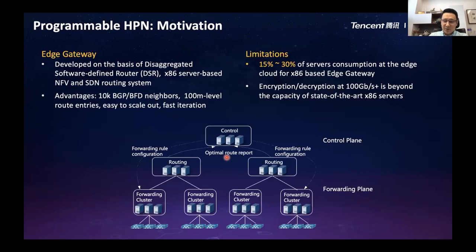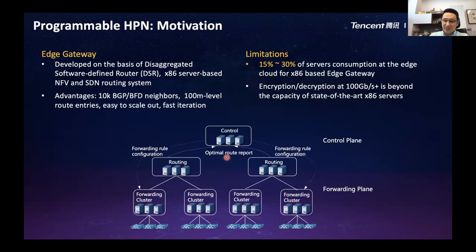The advantage is very clear: this kind of software gateway is very flexible and easy to scale out. We can support more than 10,000 BGP and BFD neighbors in this architecture. However, the software gateway also has limitations. For example, we need a lot of servers in our edge cloud to support this software-based gateway — roughly about 30% of servers in each edge cloud site are consumed just for the gateway, not for computing services to our customers.